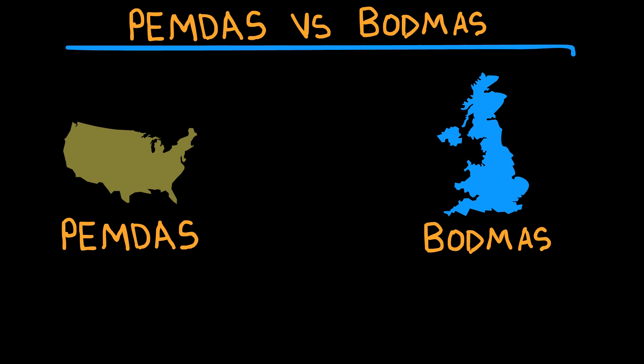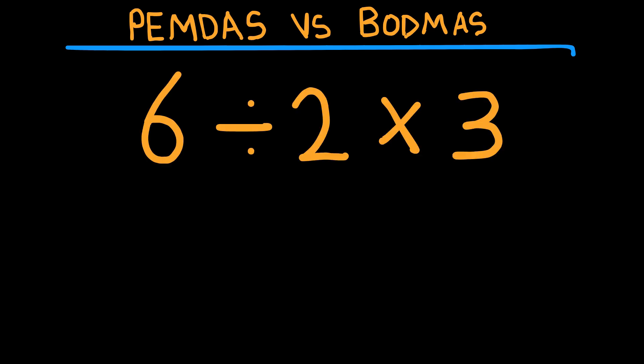Notice something. Multiplication and division are on the same level. They are not done in any special order other than left to right. So under the strict PEMDAS or BODMAS rules, we should treat 6 divided by 2 times 3 and go from left to right.